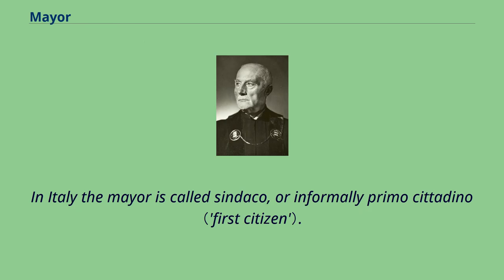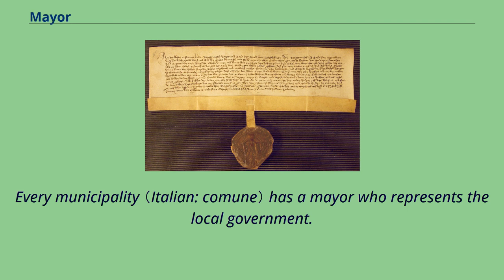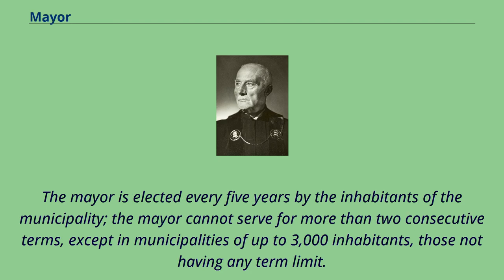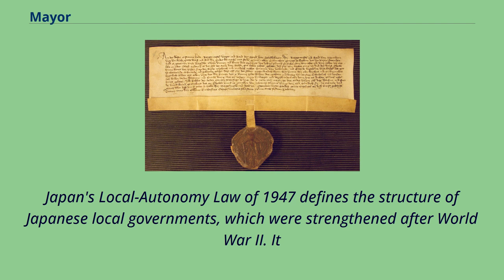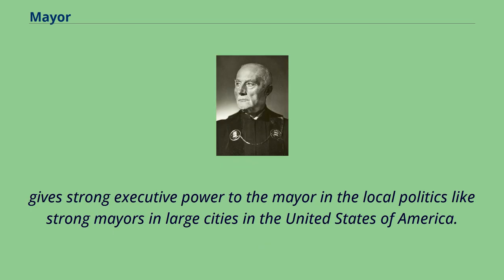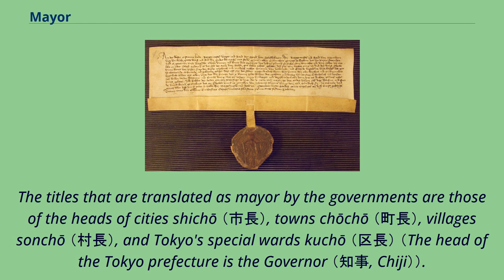In Italy the mayor is called sindaco, or informally primo cittadino. Every municipality has a mayor who represents the local government. The mayor is elected every five years by the inhabitants of the municipality and cannot serve for more than two consecutive terms, except in municipalities of up to 3,000 inhabitants, which have no term limit. Japan's Local Autonomy Law of 1947 defines the structure of Japanese local governments, giving strong executive power to the mayor in local politics. The titles translated as mayor are those of the heads of cities (shichō), towns (chōchō), villages (sonchō), and Tokyo Special Wards (kuchō). A mayor is elected every four years by direct popular vote, held separately from the assembly.